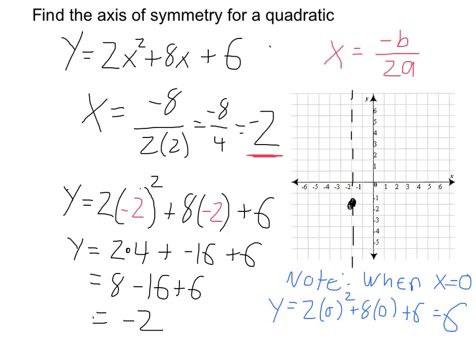and if I want to get another quick point, I can plug in 0. When x is 0, y is equal to 6, so I can plot the point (0, 6) on my graph.